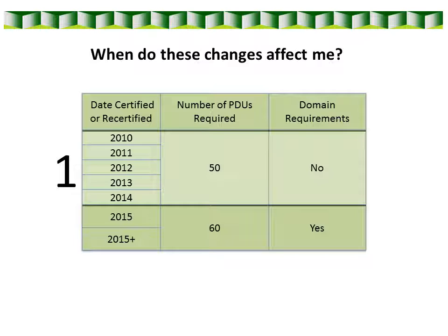Group 1 gets to finish their current certification cycle under the old rules. This was the contract, if you will, that we made with you when you became certified. When you recertify you'll start a new cycle and we'll have a new contract that follows the new rules. Group 2 consists of those who become certified and those who successfully recertify in 2015 or later, including those CCLSs who passed the exam in 2015.